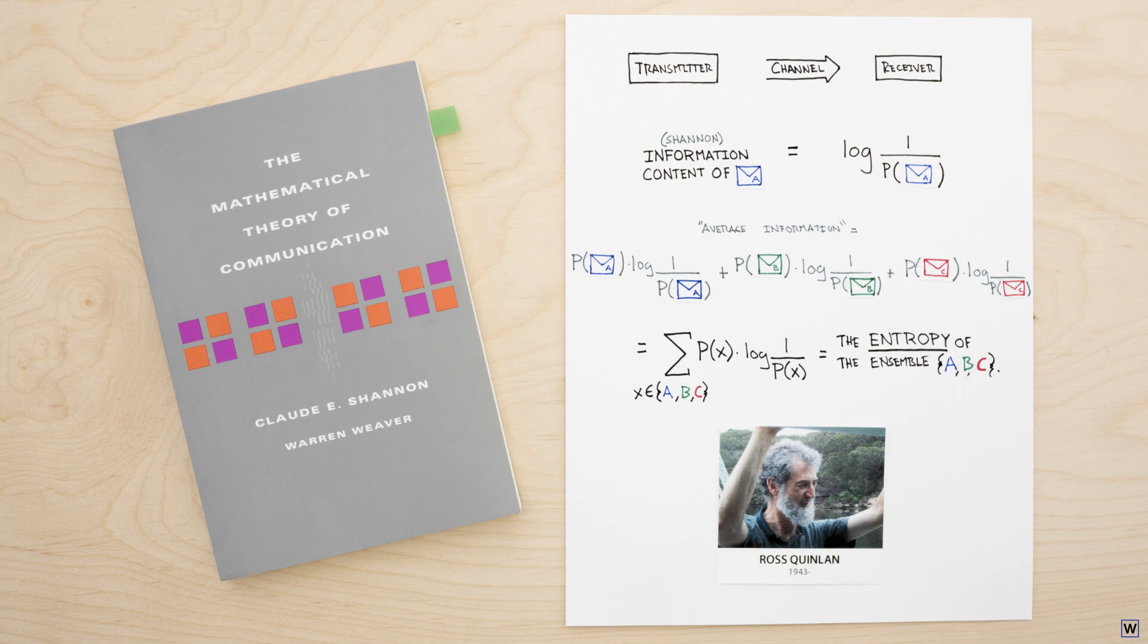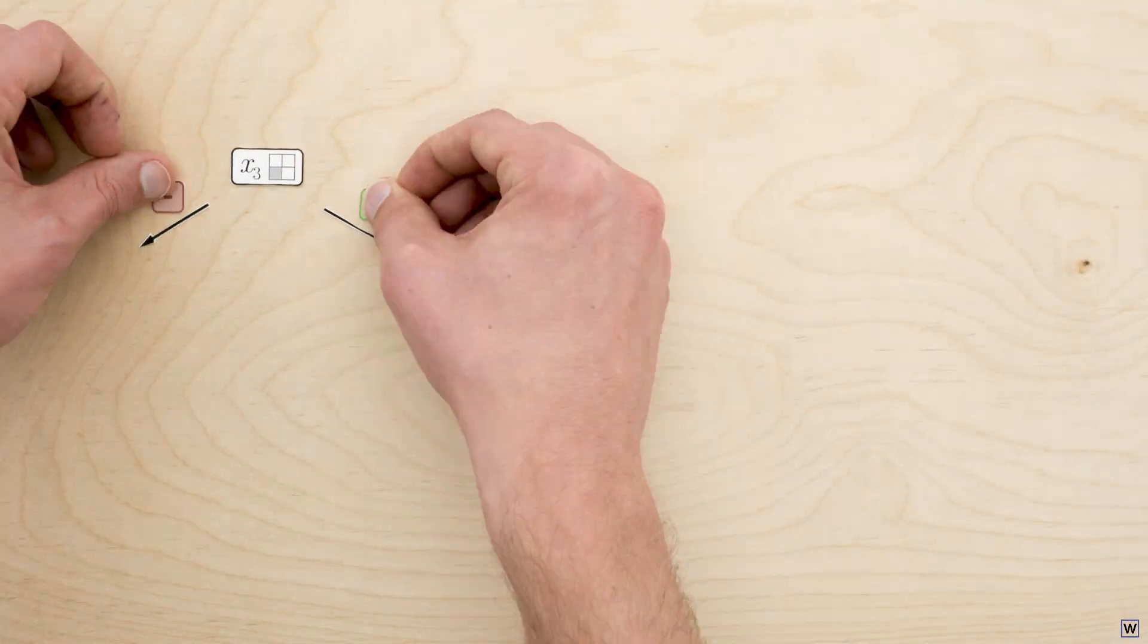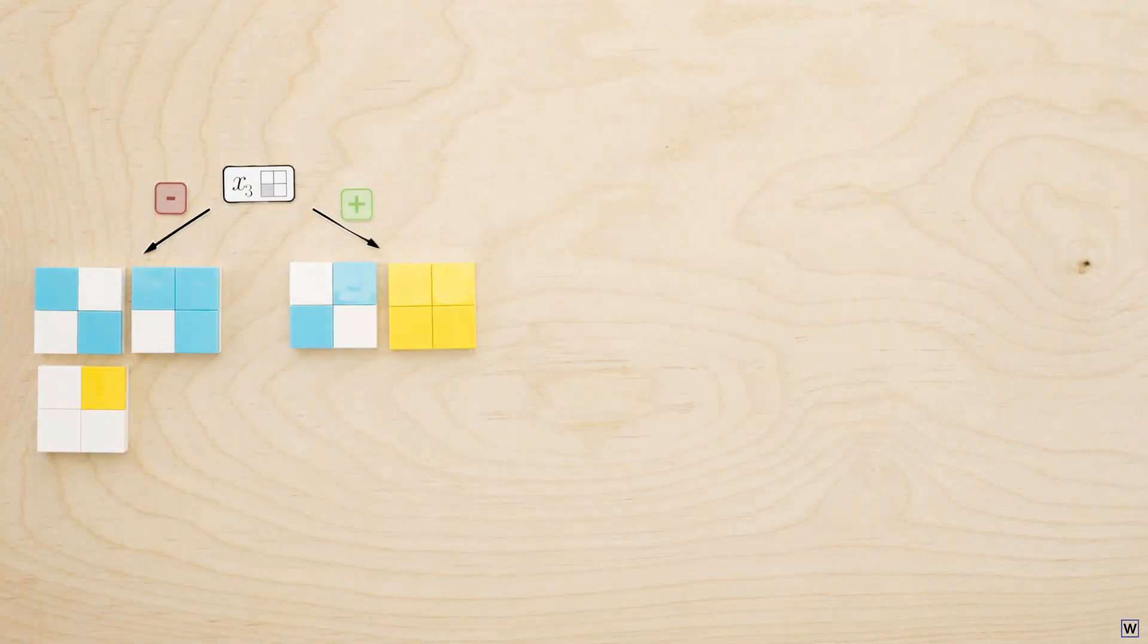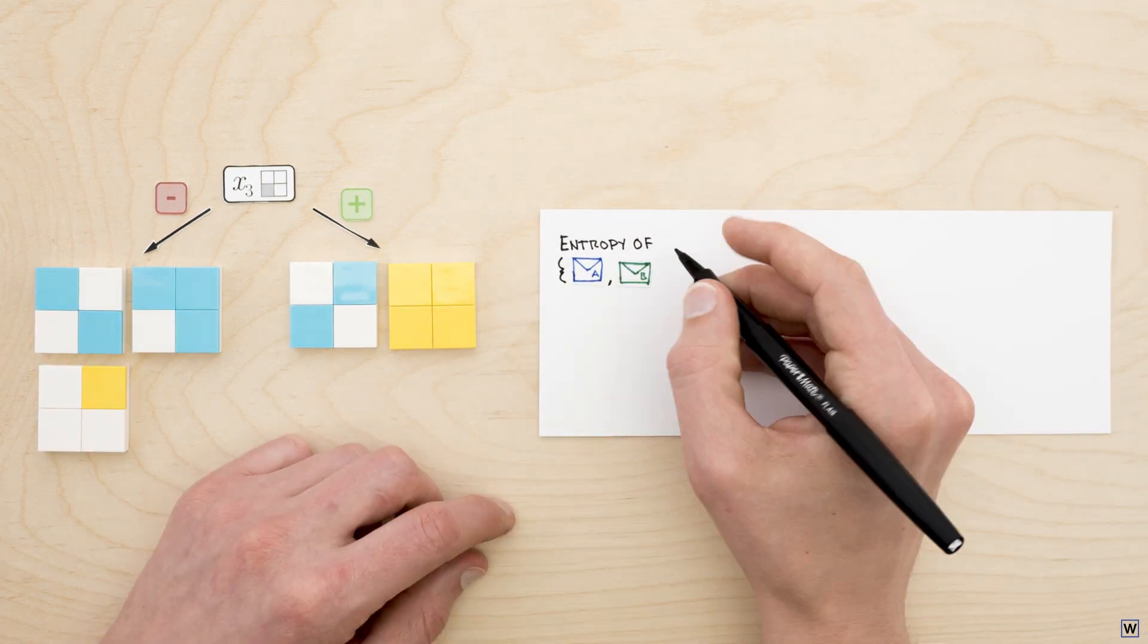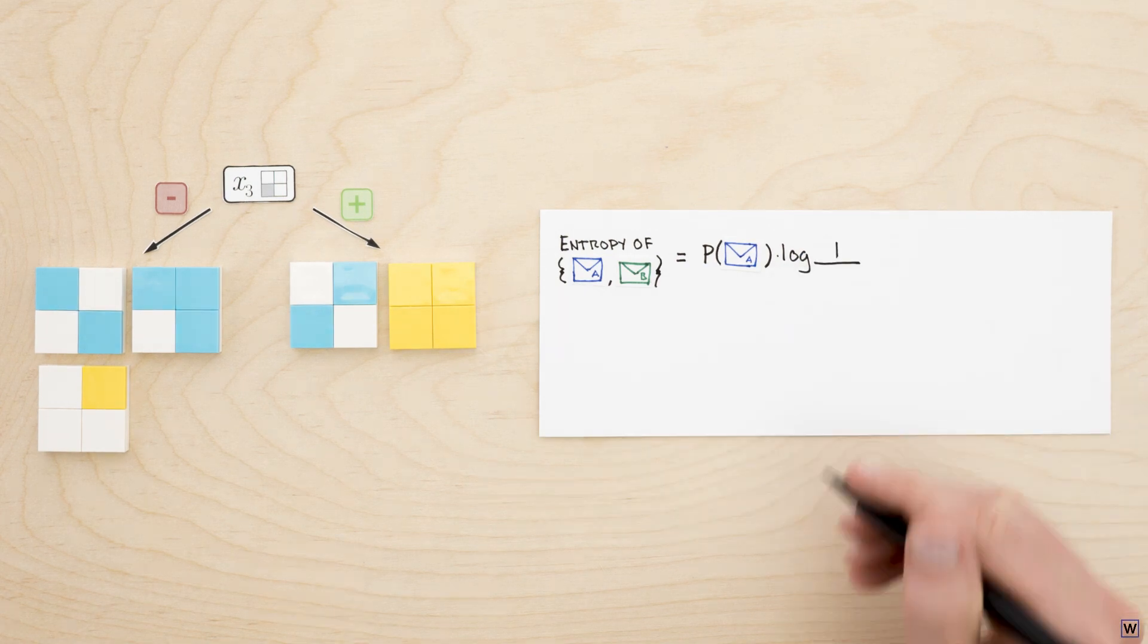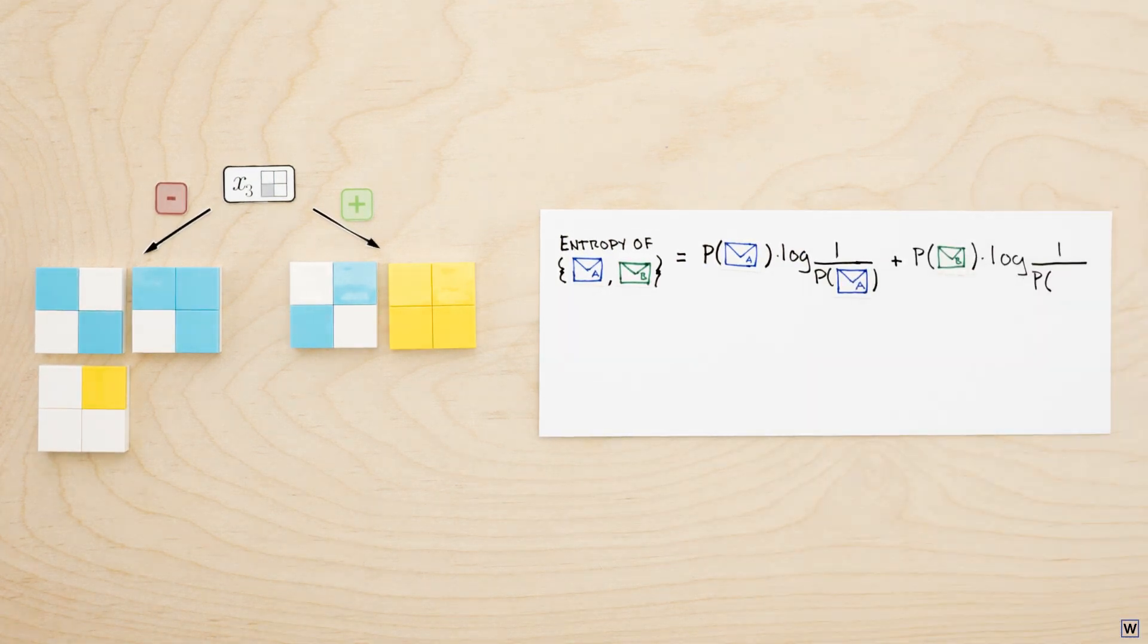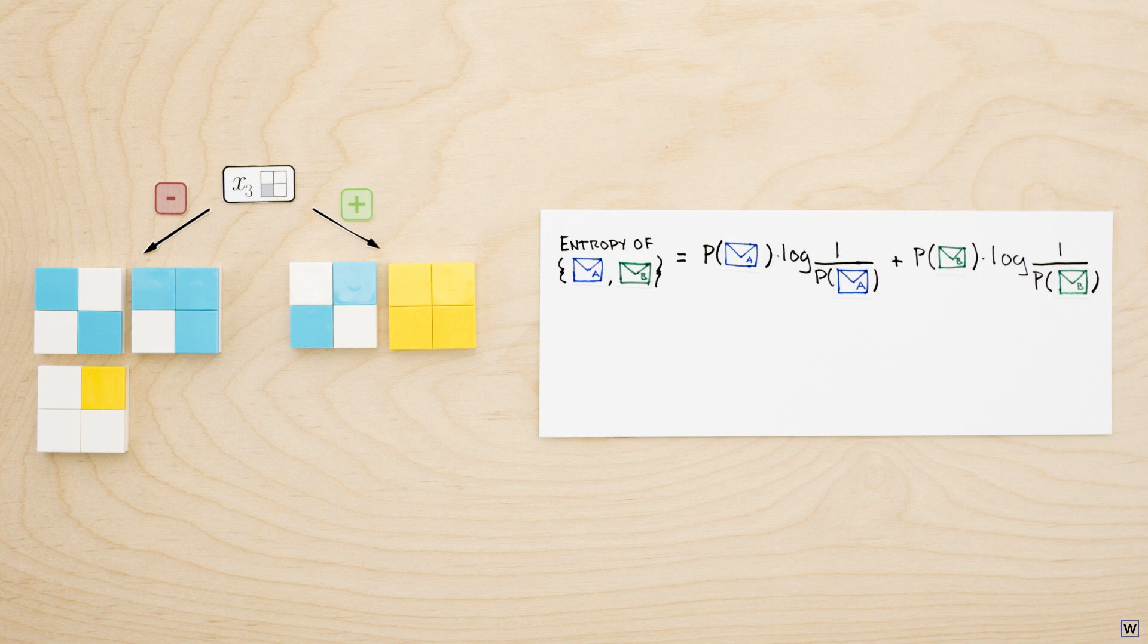To do this, we must, of course, generalize the tools of information theory to fit our problem. To measure the information gained by a given split, we need to generalize the concept of average information content, entropy. Instead of strictly defining entropy to be the information content averaged across different messages, let's allow entropy to be the information content averaged over the elements of a set. In this case, our set is the examples contained in a given node.